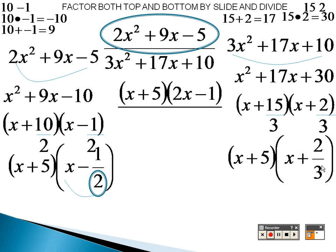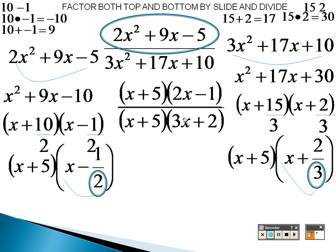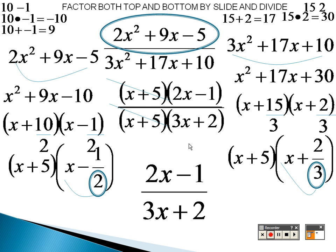So I'm going to move that 3 over, and those are each of the top and the bottom factored. Do you see anything there that crosses out? Yeah, the x plus 5's cross out, so all I'm left with is 2x minus 1 over 3x plus 2.